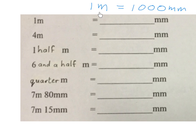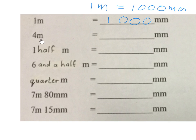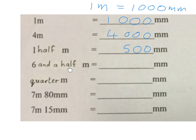Now we're converting between meters and millimeters. Quick reminder: one meter is 1000 millimeters — you need to know that basic fact. So one meter gives 1000 millimeters. Ask: who is the big one and who is the small one? There are 1000 small ones per big one. For every meter you have, you get 1000 millimeters. A half meter is half as big, so it's half of 1000 — which is 500 millimeters. Six and a half meters: 6 × 1000 = 6000, plus 500 for the half, giving 6500 millimeters.